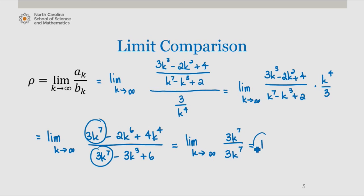But ultimately, we find that rho is finite and positive, so by the limit comparison test, we know that since the series that we compared to, since this series converges and rho is finite and positive, then so does our original series.